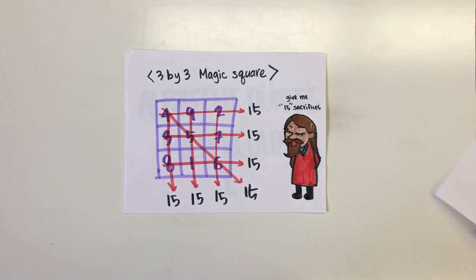The Loshu square is one of the first recorded magic squares. Each of the rows, columns, and diagonals add up to a magic number, which in this case is 15.